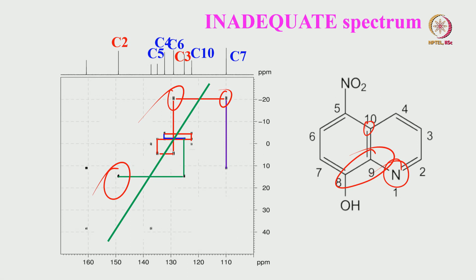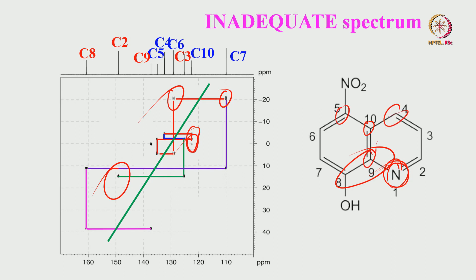From C7 you can come horizontally, then vertically down horizontally again - it is coupling to another carbon, this has to be C8. Come vertically and you will hit another carbon - this has to be C9. So when there is a dead end because of the heteroatom, you start from another point. Finally, all the carbon skeleton could be traced out. C10 correlates not only to C5 but also to C9 and C4. From C9 you can also go back and hit C10 - either direction works.